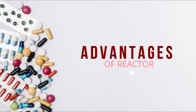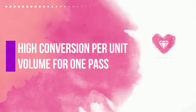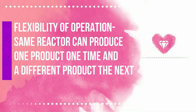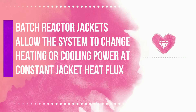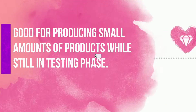Advantages of the reactor: High conversion per unit volume for one pass. Flexibility of operation — the same reactor can produce one product at one time and a different product the next, with flexibility to clean. Batch reactor jackets allow the system to change heating or cooling power at constant jacket heat flux. Good for producing small amounts of products while still in the testing phase.